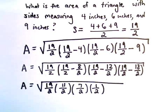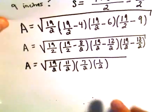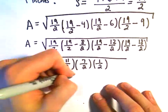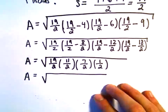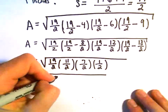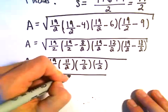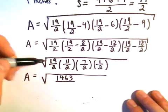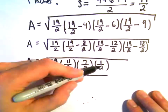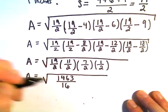And at this point, I don't see much of anything that's really going to simplify down nicely. Nothing's going to cancel out. That's okay. So we can do 19 times 11 times 7 times 1. I'm getting 1,463 over, in the denominator, you'd have 2 times 2, which is 4 times 2, which is 8 times 2, which is 16.